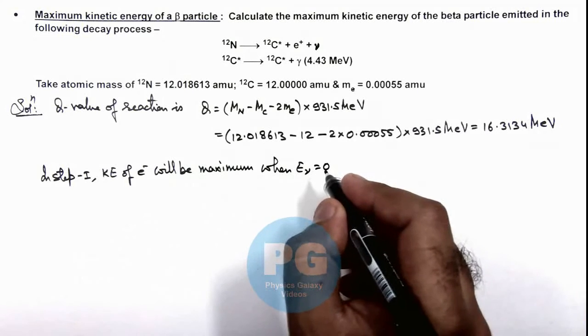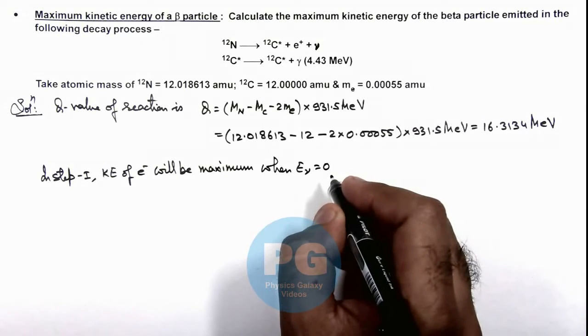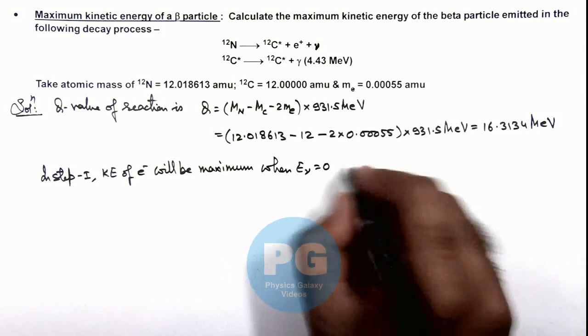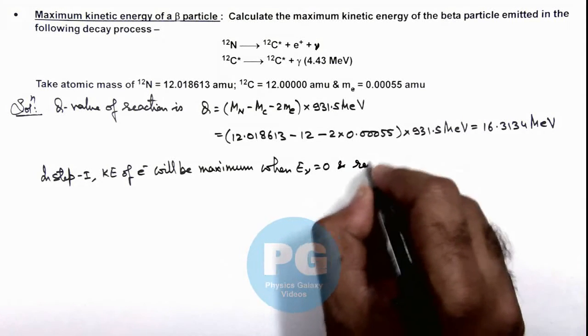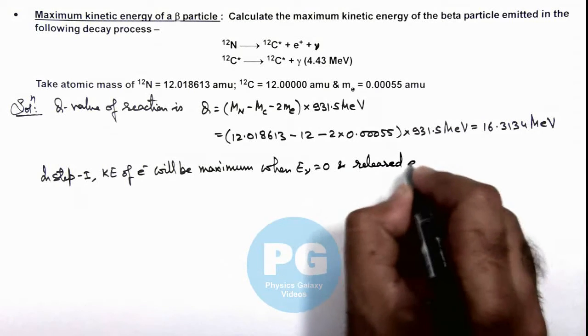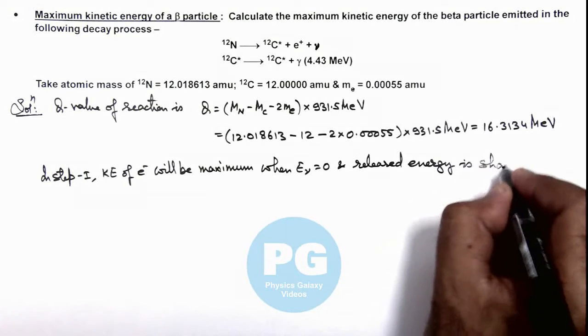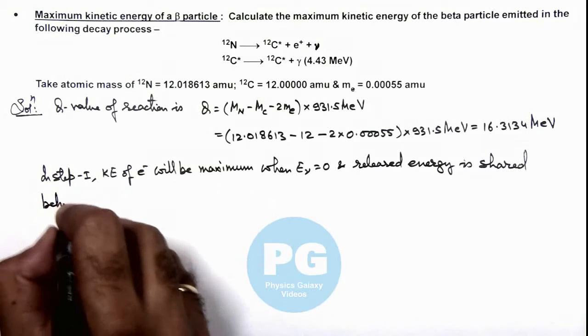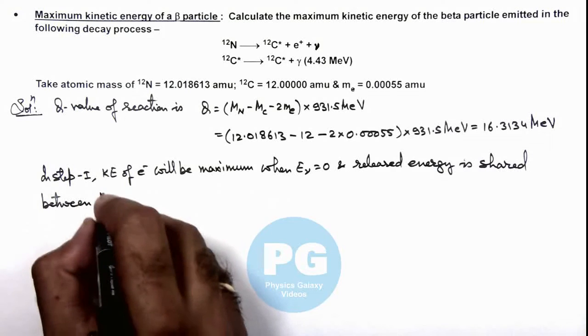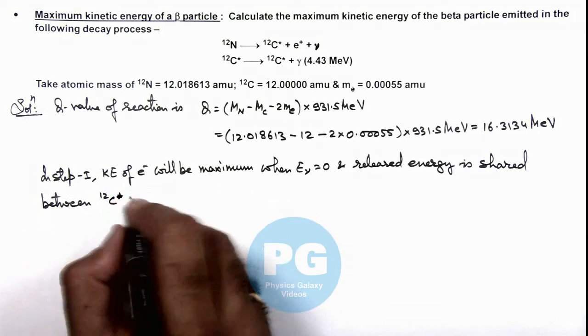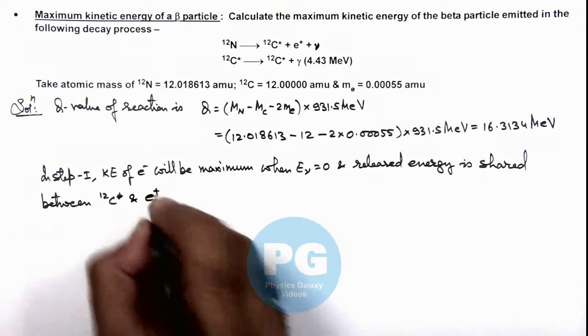The released energy is shared between the excited carbon nucleus and the beta plus particle only. This we can also write as e+ as we are talking about beta plus.